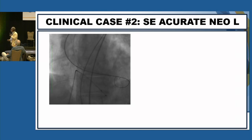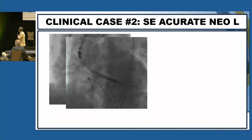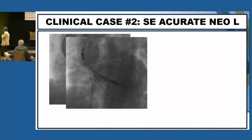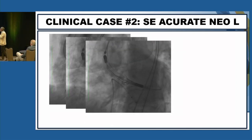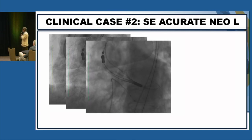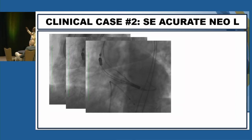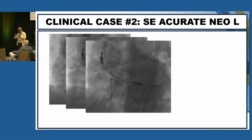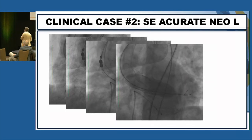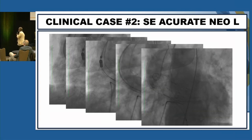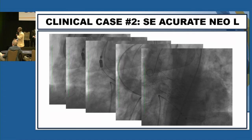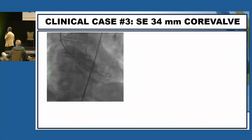This is another case with Acurate NEO. We went with pre-dilatation, then implanted the valve. There's a kind of facilitated mechanism because you open up the stabilization arch first, just to change the parallax a little bit, and then go with the final implantation and post-dilatation. This is the final result — not too bad. There are some tricks to follow depending on the valve you use.